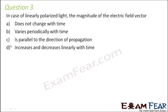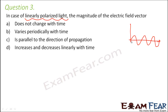Question number 3: In the case of linearly polarized light, the magnitude of the electric field vector — does it not change with time, vary periodically with time, is parallel to the direction of propagation, or increase and decrease linearly with time? A linearly polarized light is always in the form of an electromagnetic wave. The magnitude of the electric field vector in an electromagnetic wave does not remain constant — it varies periodically with time. The electric field and magnetic field vary perpendicularly to each other. So option B is the correct answer.